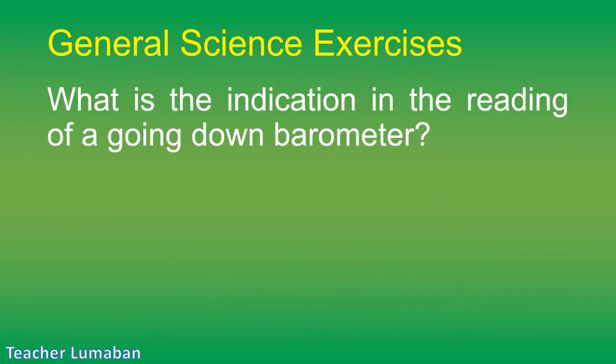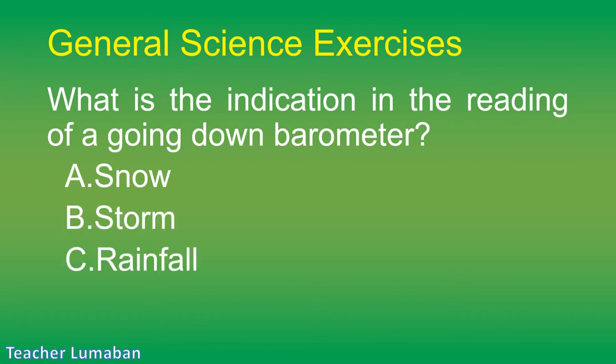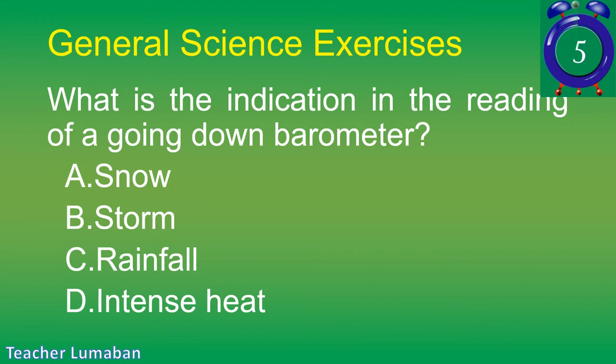What is the indication of a going-down barometer reading? Letter A: snow. Letter B: storm. Letter C: rainfall. Letter D: intense heat.